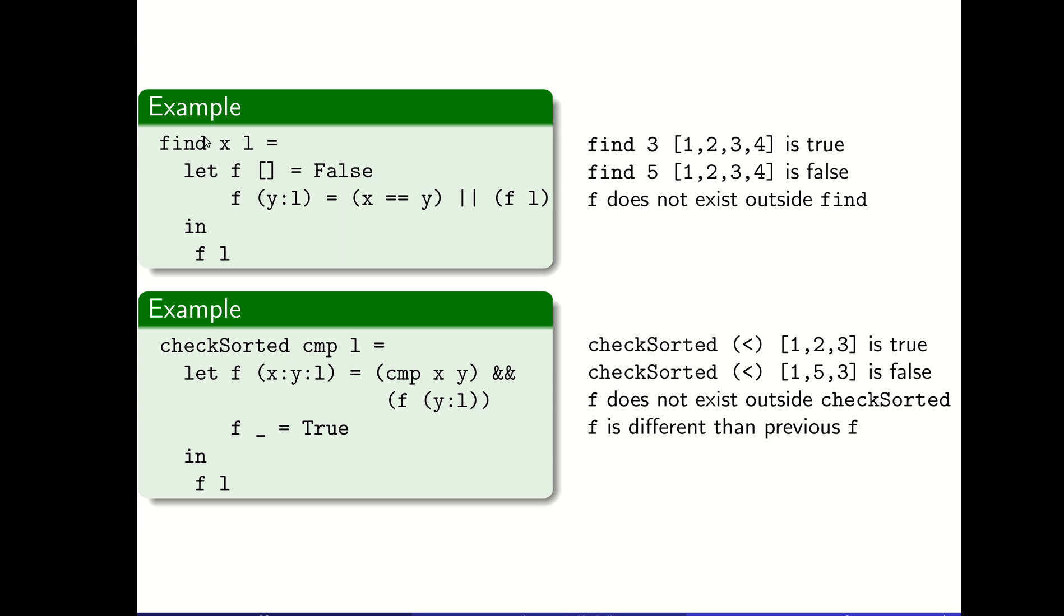Here are a couple of other function definition examples showing how the let statement works when defining a helper function. We define find: to find x in list l, we can define a helper function f where when the list is empty, f called on an empty list returns false. When f is called on a list with a head and tail, we recursively call f and see if that thing is contained at our current location or somewhere later. We say that's used in f of l, so we've got this helper function defined internally that's being used on the input list. F does not exist outside of this find.